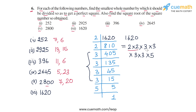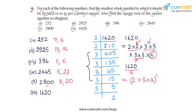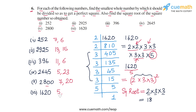Pairing up the prime factors of 1620, we have a pair of 2, one pair of 3, and another pair of 3, but the 5 is left unpaired. So we divide 1620 by 5 to get a perfect square. We are left with a pair of 2 and two pairs of 3, written as (2 × 3 × 3)². The square root is 2 × 3 × 3 = 18. So we divide 1620 by 5 to get a perfect square, and the square root is 18. With this, we have completed all parts of question 6.